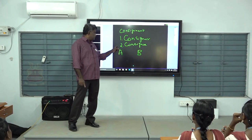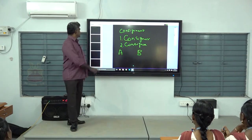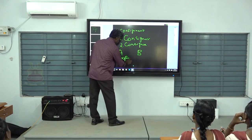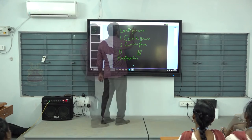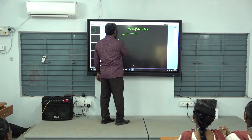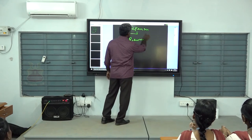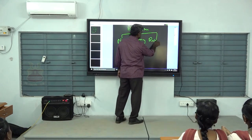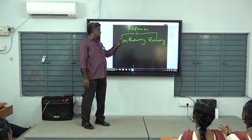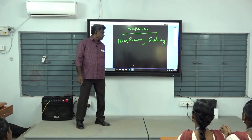When A dispatches the goods, he has to incur some expenses. Expenses are divided into two in the case of consignment: one is non-recurring expenses, and another one is recurring expenses.